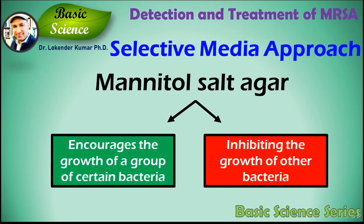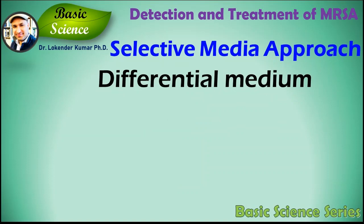This medium is important in medical laboratories as one method of distinguishing pathogenic microbes in a very short period of time. It contains a high concentration — about 7.5% to 10% — of salt, which is sodium chloride, making it selective for gram-positive bacteria such as Staphylococcus and Micrococcus, since this level of salt is inhibitory to most gram-negative bacteria.